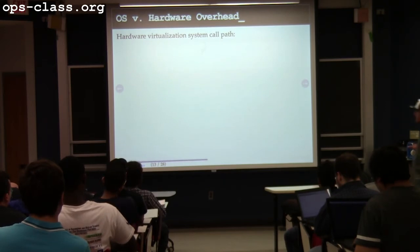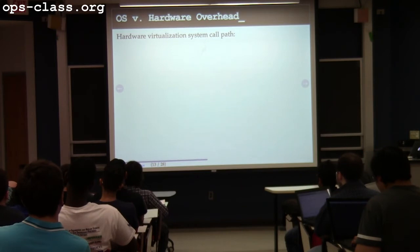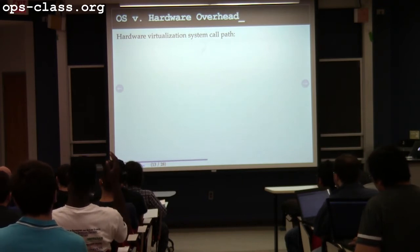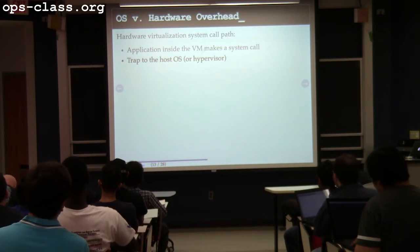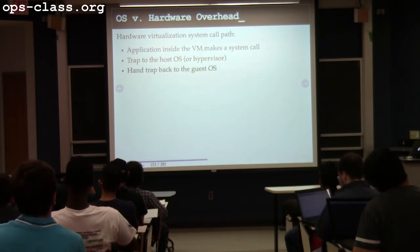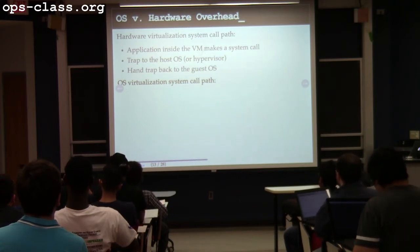Back to the overhead question. What had to happen in a virtualized environment for an application inside a virtual machine to make a system call? A guest application makes a system call — the host operating system has to see every interrupt and exception on the system to maintain control, then re-vectors it to the hypervisor, which then hands it back to the guest operating system. There's a bunch of transitions here.